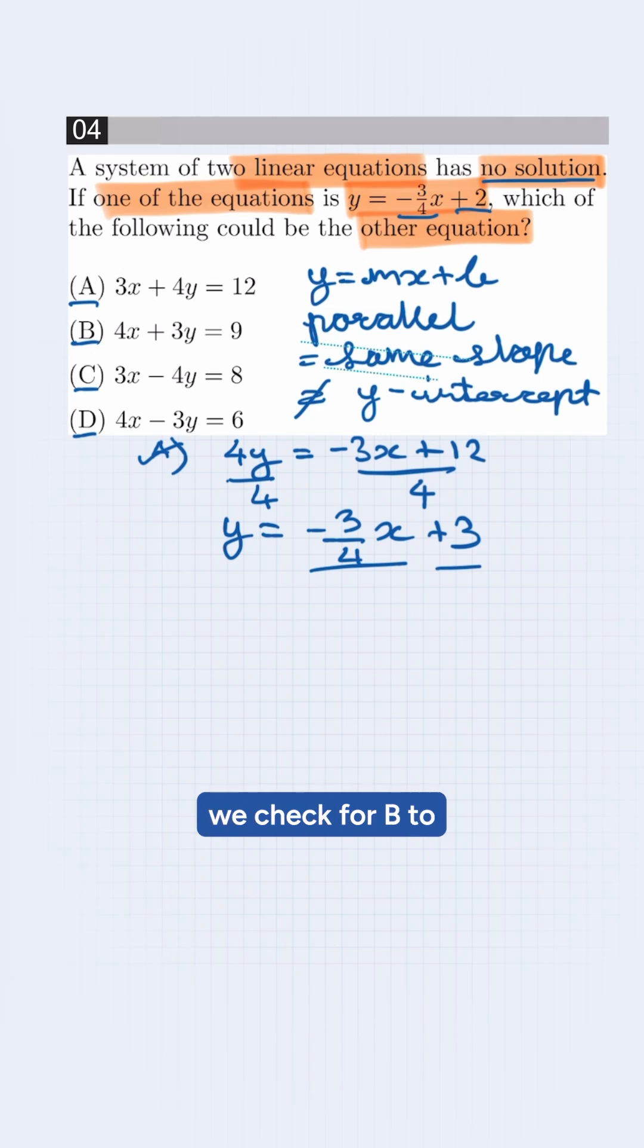But to confirm, we check for B too. In slope-intercept form, it will be 3y = -4x + 9. Dividing both sides by 3, this will be y = -4/3x + 3.